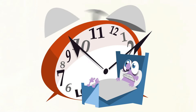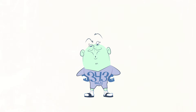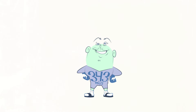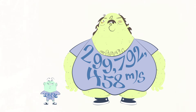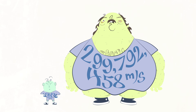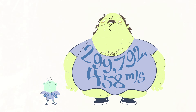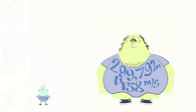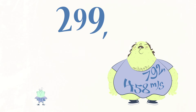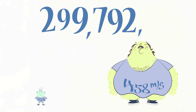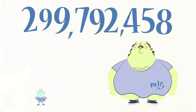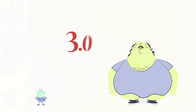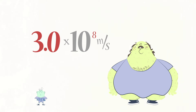Whether you like it or not, we use numbers every day. Some numbers, such as the speed of sound, are small and easy to work with. Other numbers, such as the speed of light, are much larger and cumbersome to work with. We can use scientific notation to express these larger numbers in a much more manageable format, so we can write 299,792,458 mps as 3.0 x 10⁸ mps.